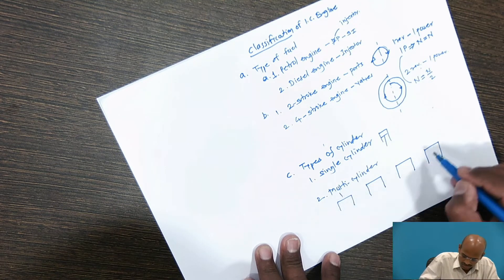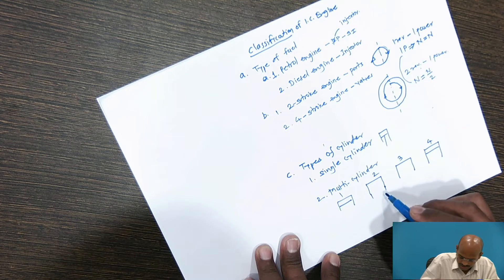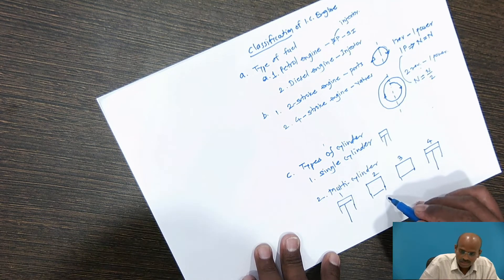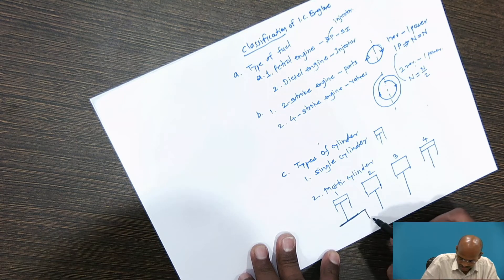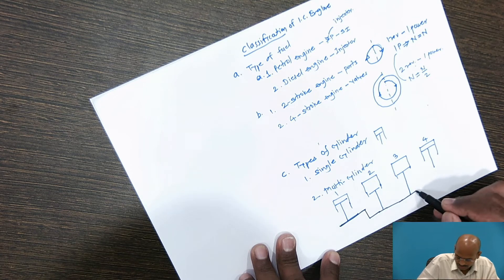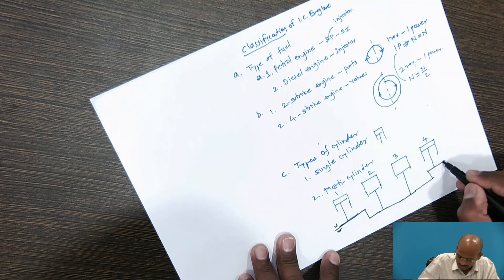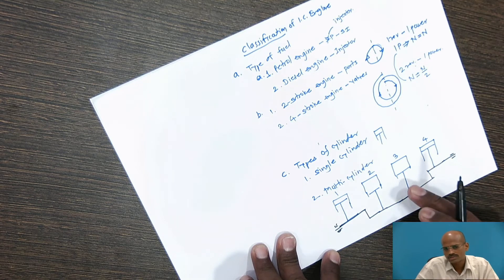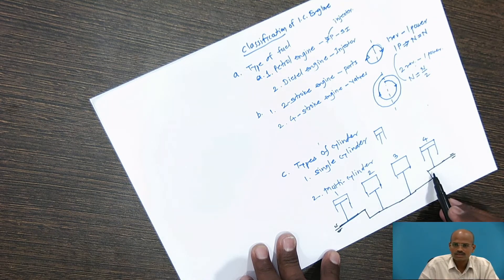For example, if the firing order is 1, 4, 2, 3, then first and fourth cylinders are fired, then second and third after that. There are separate connecting rods for each pair, all sharing a single crankshaft. Multi-cylinder in-line engines are perfectly balanced engines.